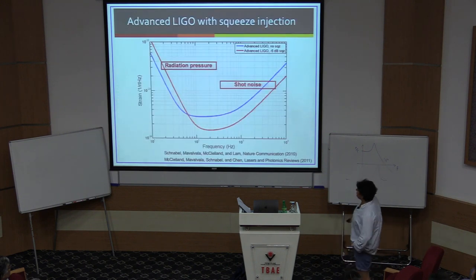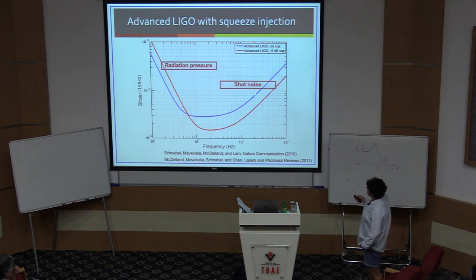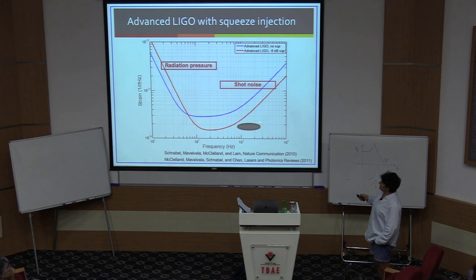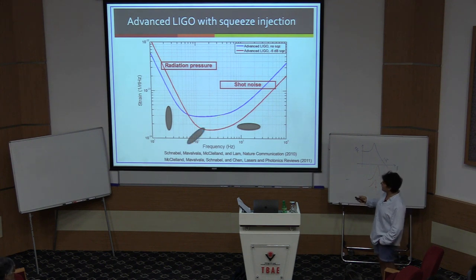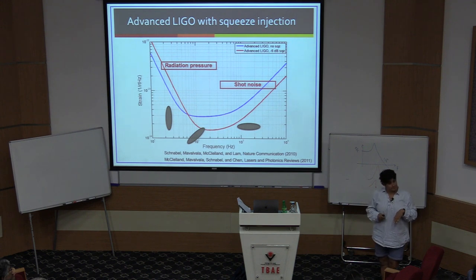So here is the advanced LIGO target sensitivity — the blue curve. You are used to thinking about shot noise at high frequencies and radiation pressure noise at low frequencies. If I put in 6 dB of squeezing, I will make an improvement in the shot noise. And as we were worried, it gets worse at low frequencies, because at high frequencies we would like squeezing along the phase quadrature, but at low frequencies we would like squeezing along the amplitude quadrature. Our squeezed light source only puts out squeezing at a fixed orientation for the squeezing ellipse. If we arrange that fixed orientation to improve high frequencies, we pay the price at low frequencies.